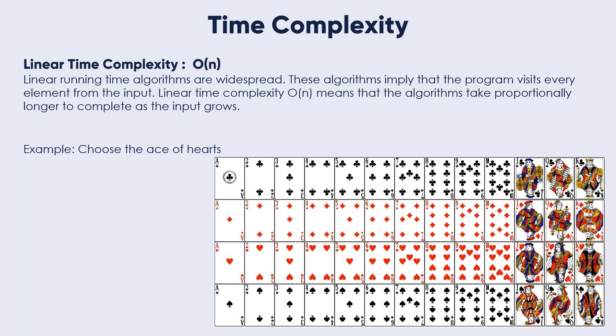Imagine that we have 100 cards. Maybe we can find the ace of hearts at the first pick card or the card number 100, which is the last card. This depends directly on the input. As we increase the number of cards, we increase the time complexity to find a specific card. This is very important to understand.